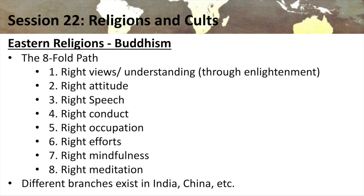The Eightfold Path of Buddhism consists of: right views and understanding, right attitude, right speech, right conduct, right occupation, right efforts, right mindfulness, and right meditation. This is entirely works-based — man trying to achieve enlightenment through right attitude, ethical conduct, and meditation that empties the self. This belief system has permeated American culture significantly — you hear constantly about meditation, right zen, and similar concepts.